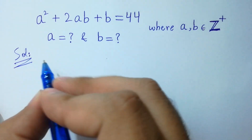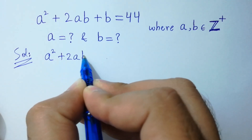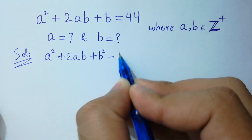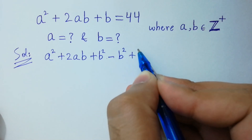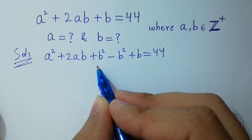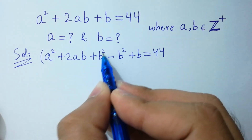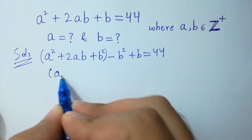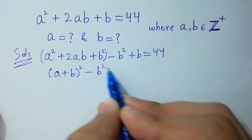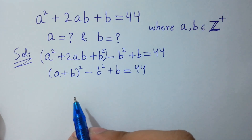It will be equal to a² + 2ab + b² - b² + b = 44. I wrote plus b² minus b² to get (a + b)² - b² + b equal to 44. I hope you understood.